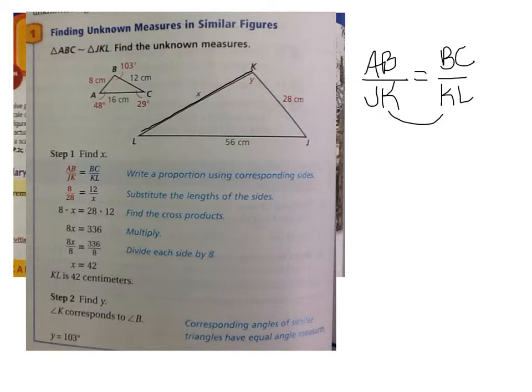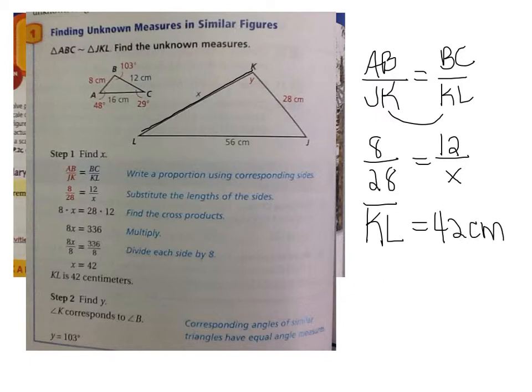So this is the proportion I'm going to use. Now I'm going to set it up. Do I know the length of AB? Yes, I do. It is 8. Do I know the length of JK? Yep. It's 28. Do I know BC? Yep. 12. So I'm trying to find KL, so I'm going to put X in for my variable. So to find the length of KL, I'm going to go 28 times 12 divided by 8. And you'll find that you get 42, right? So you would say that KL, line segment KL, equals 42 centimeters.